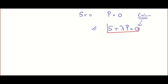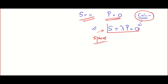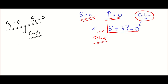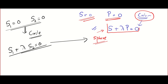All spheres in the family are given by S + λP = 0, where S is the equation of the sphere and P is the equation of the plane. The speciality of this equation is that every sphere in this family will contain the circle generated by S and P. Similarly, if two spheres S₁ and S₂ intersect forming a circle, then S₁ + λS₂ = 0 is also a sphere containing that same circle.